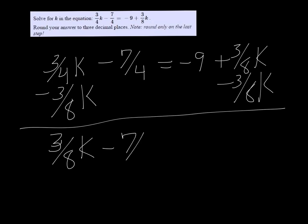Minus 7/4 is equal to -9. Now we can add 7/4 on both sides to get the, we're trying to get the k by itself.